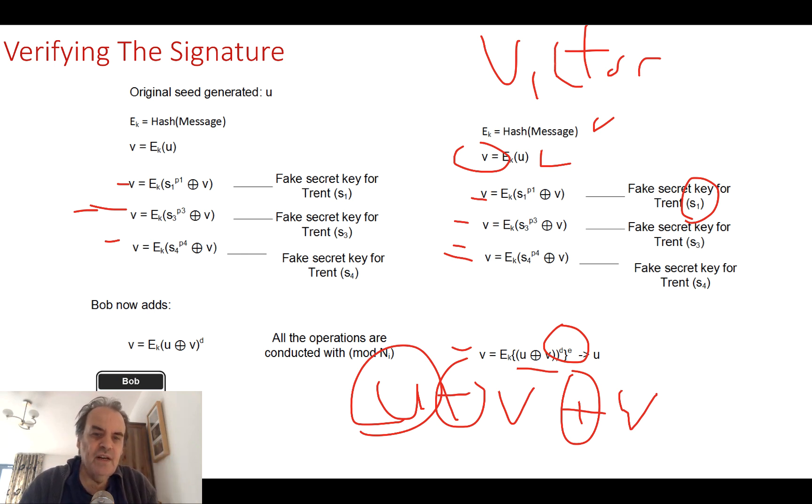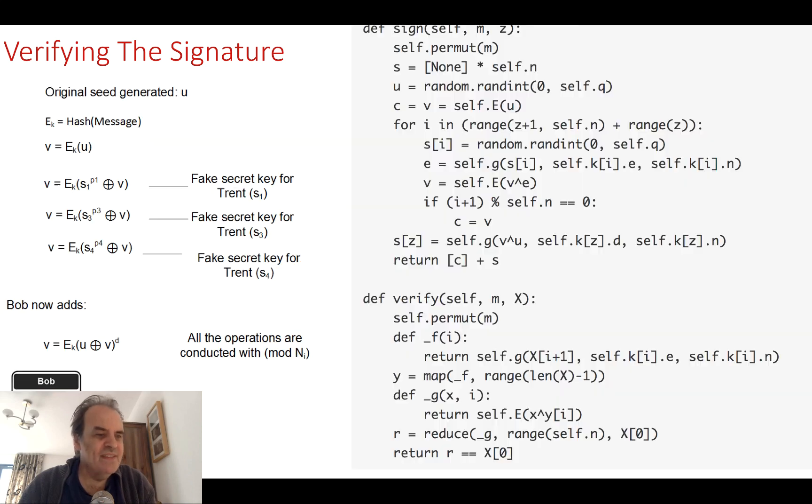If you remember that we send the secret keys in an order which really can't identify who actually signed it. Most of them, all of them apart from one, are the fake keys. And the other one is the trapdoor function. I hope that makes sense.